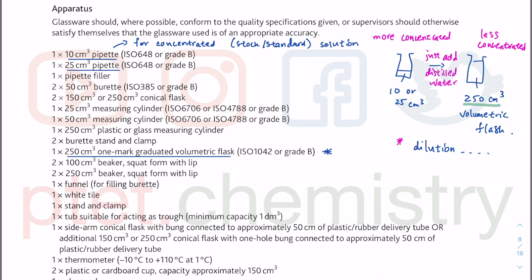These steps are covered in my short tutorial videos on how to make a stock solution — either by serial dilution or starting from a solid. The mole is conserved because you're just adding water: mole equals concentration times volume, so C₁V₁ = C₂V₂. That's what you covered at GCSE or IGCSE level. The mole of the concentrated solution equals the mole of the diluted solution. Your volume is bigger, therefore your concentration is smaller — more dilute.